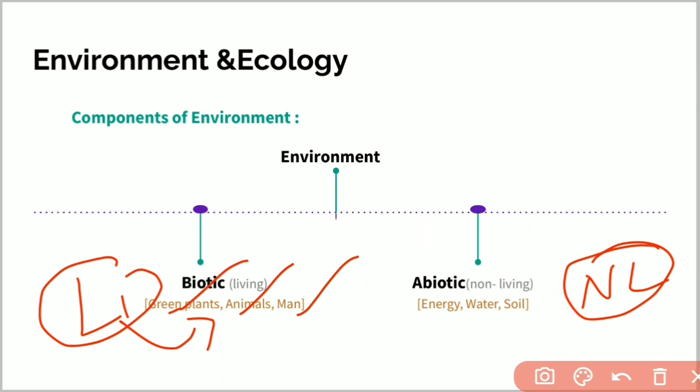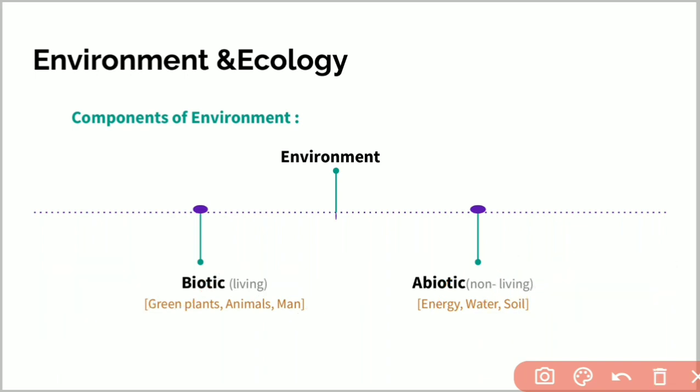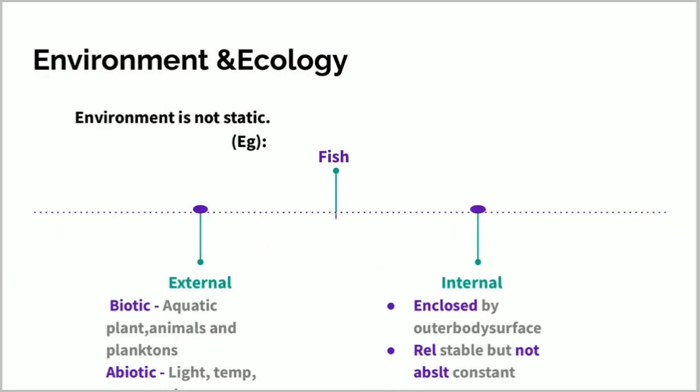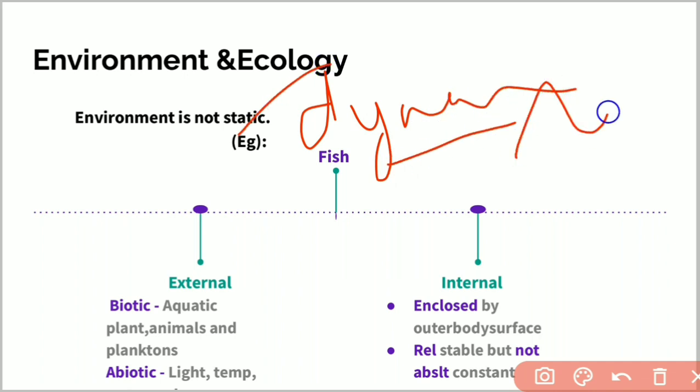Abiotic components are energy, water, and soil. Environment is not static but dynamic. Static means stable and constant, dynamic means something modified.